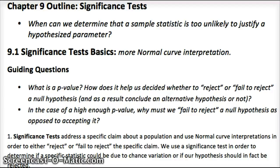Significance tests are really similar to confidence intervals that we just covered. However, a significance test is kind of like looking at the opposite of a confidence interval. We developed a confidence interval and then decided if something was plausible based on whether the value was within our interval. A significance test looks at a sample statistic and decides whether it's plausible by determining whether it's outside the confidence interval. So they're kind of like complements to each other.